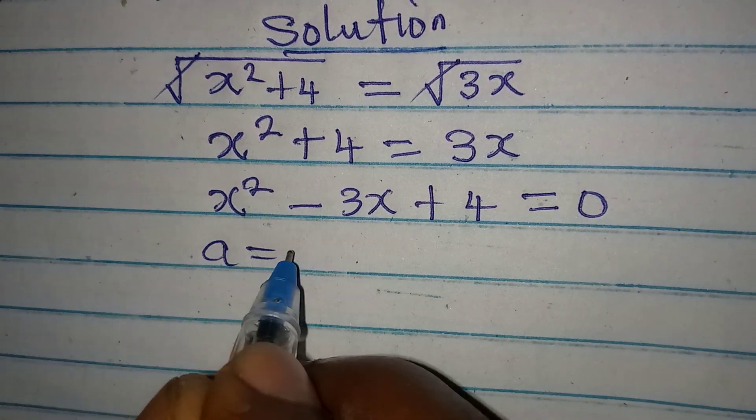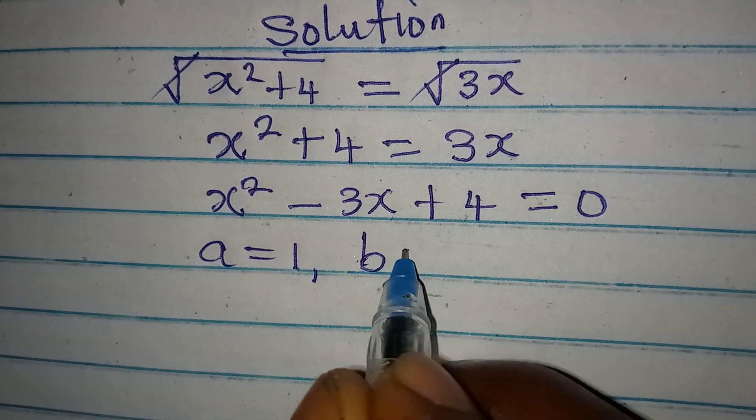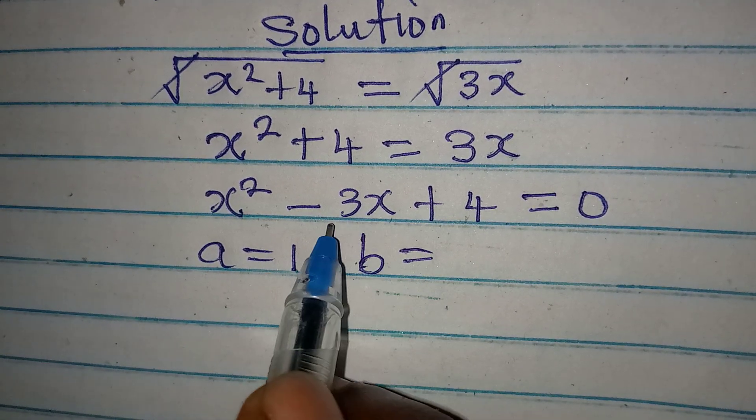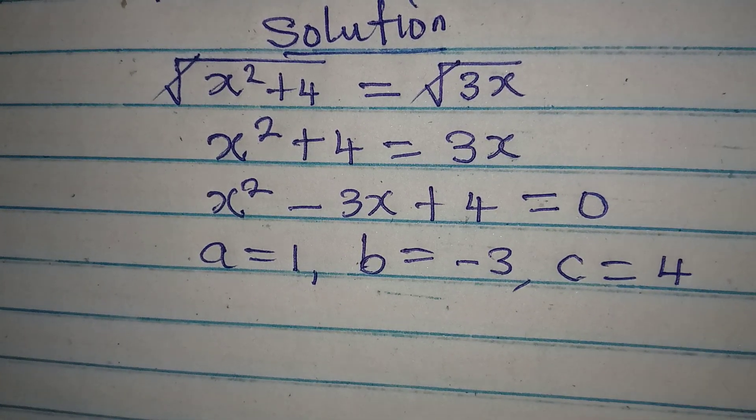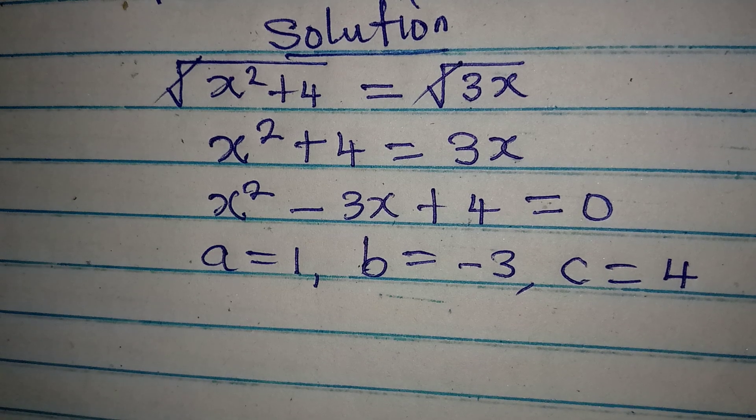Now, our a is 1. Since we are going to use the formula, our b is the coefficient of x minus 3, and our c is constant, which is 4. So this is what it is.